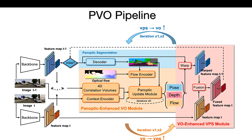Our framework consists of three modules: the Image Panoptic Segmentation Initialization Module (light blue part), the Panoptic Enhanced Visual Odometry Module (light yellow part), and the VO Enhanced Video Panoptic Segmentation Module (light red part). The last two modules contribute to each other in a recurrent interactive manner.